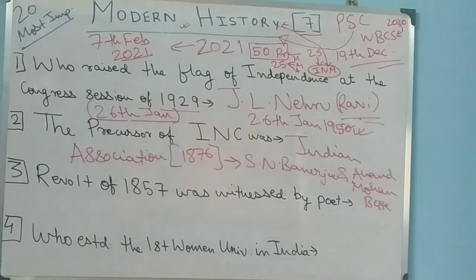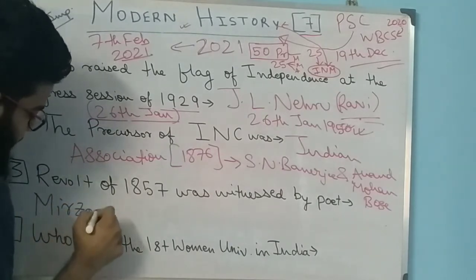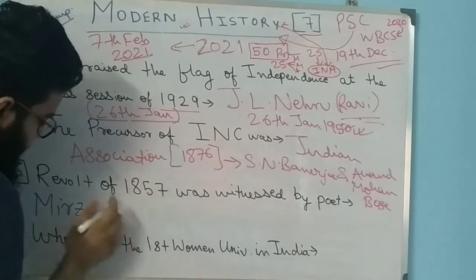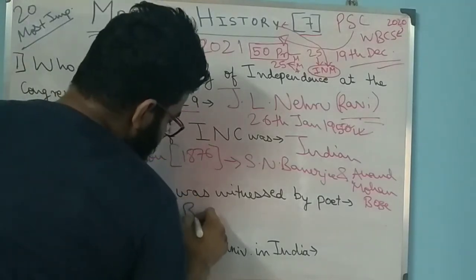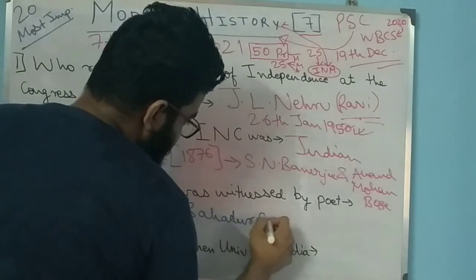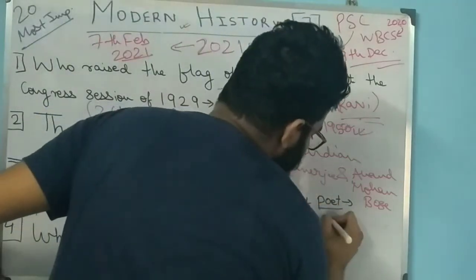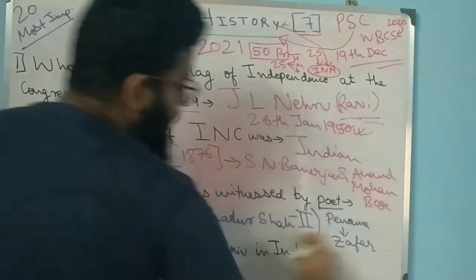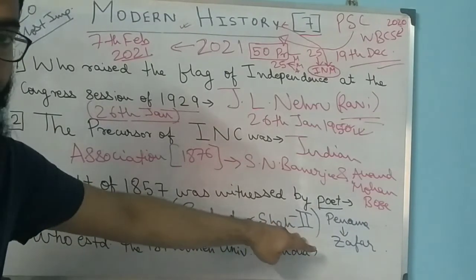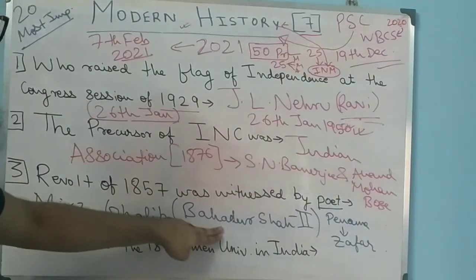Question 3: The Revolt of 1857 was witnessed by a poet - who was that poet? His name is Mirza Ghalib. Urdu medium students know who Mirza Ghalib is; his many couplets are quite famous. Bahadur Shah Zafar, who was the last Mughal ruler, had 'Zafar' as his pen name - every poet has a pen name.